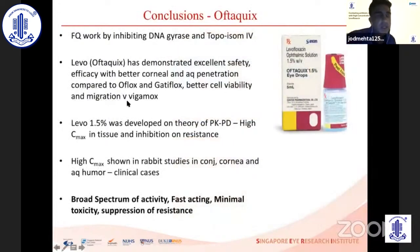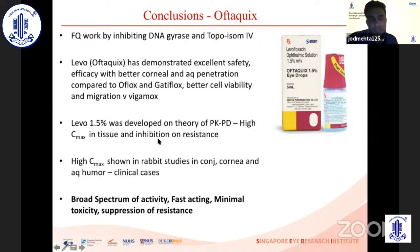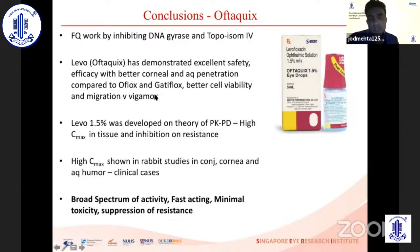In conclusion, fluoroquinolones work by DNA gyrase and topoisomerase IV inhibition. Levofloxacin 1.5% has demonstrated excellent safety and efficacy with better corneal and aqueous penetration compared to other available fluoroquinolones, and better cell survivability and migration compared to Vigamox. Levofloxacin 1.5% was developed on the theory of PKPD — achieving a high Cmax in tissue dramatically inhibits resistance development, shown theoretically, experimentally in animals, and clinically in patients. The high Cmax has been confirmed in rabbit studies in the conjunctiva, cornea, and aqueous humor. It is fast acting with minimal toxicity and suppresses the development of resistance.